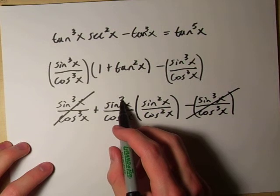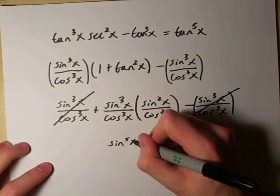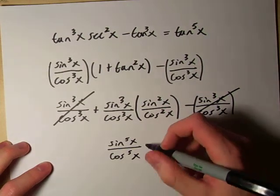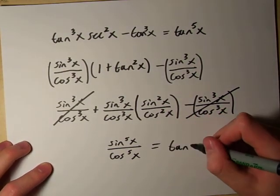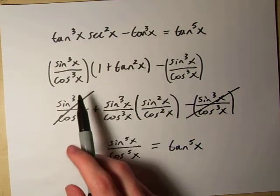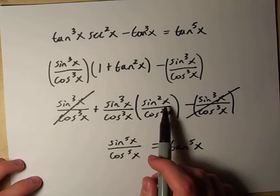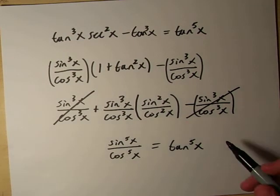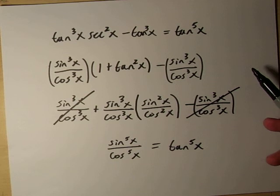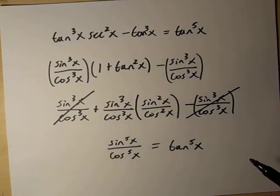So we end up with sine to the 5th power x over cosine to the 5th power x, which equals tangent to the 5th power x. This is the longer way of looking at it — we could have left it as tangent and multiplied through, getting one tangent and tangent cubed times tangent squared. But it can be helpful to work through it in terms of sine and cosine, since many people do this instinctively on tests. Perhaps a little more complex looking, but still neat nonetheless.